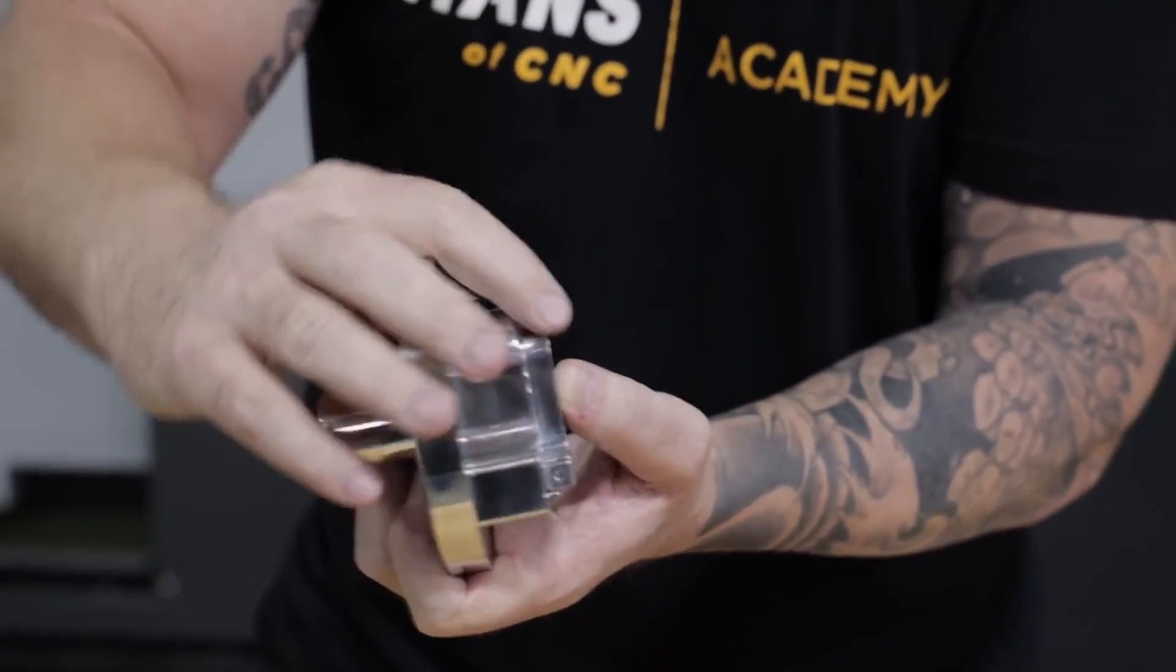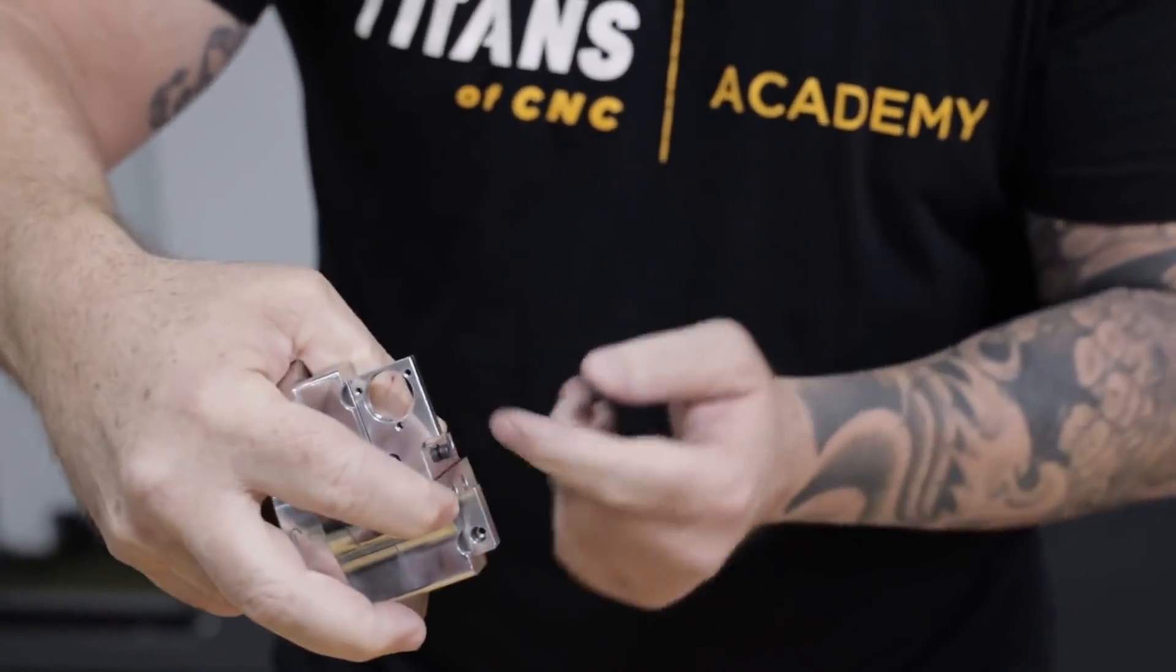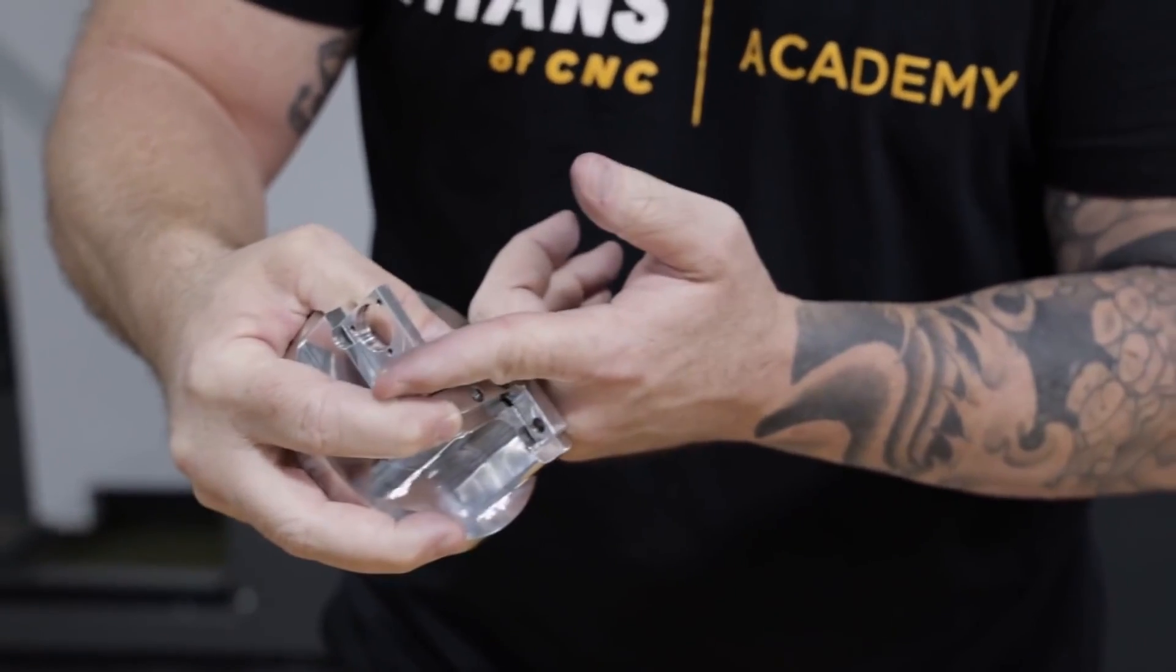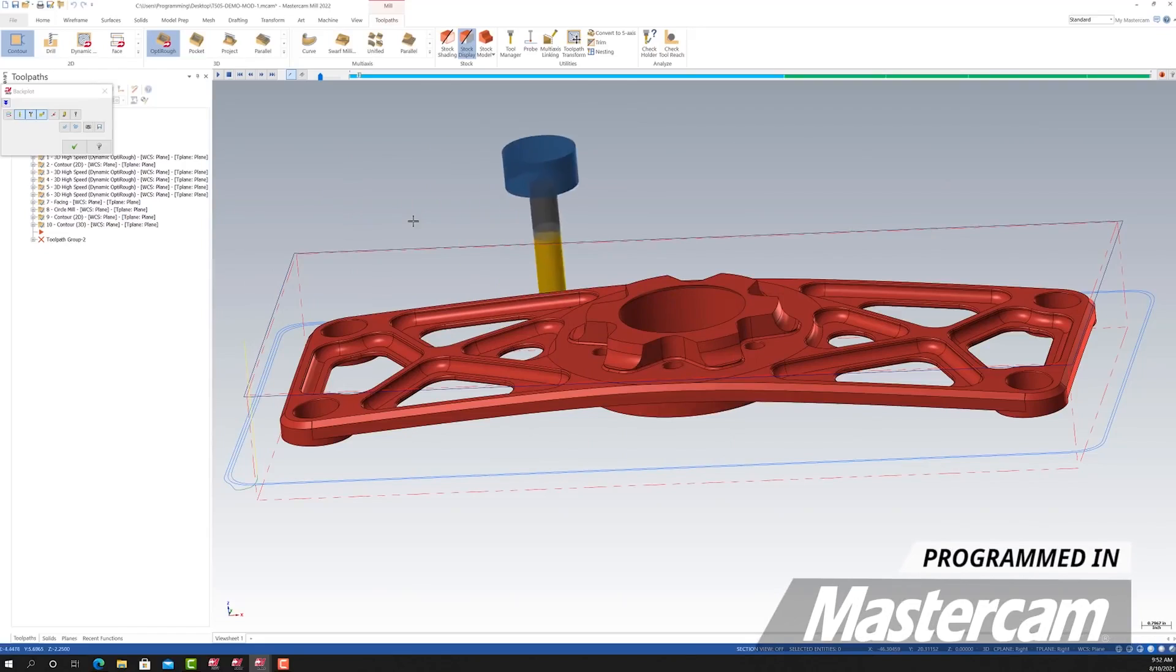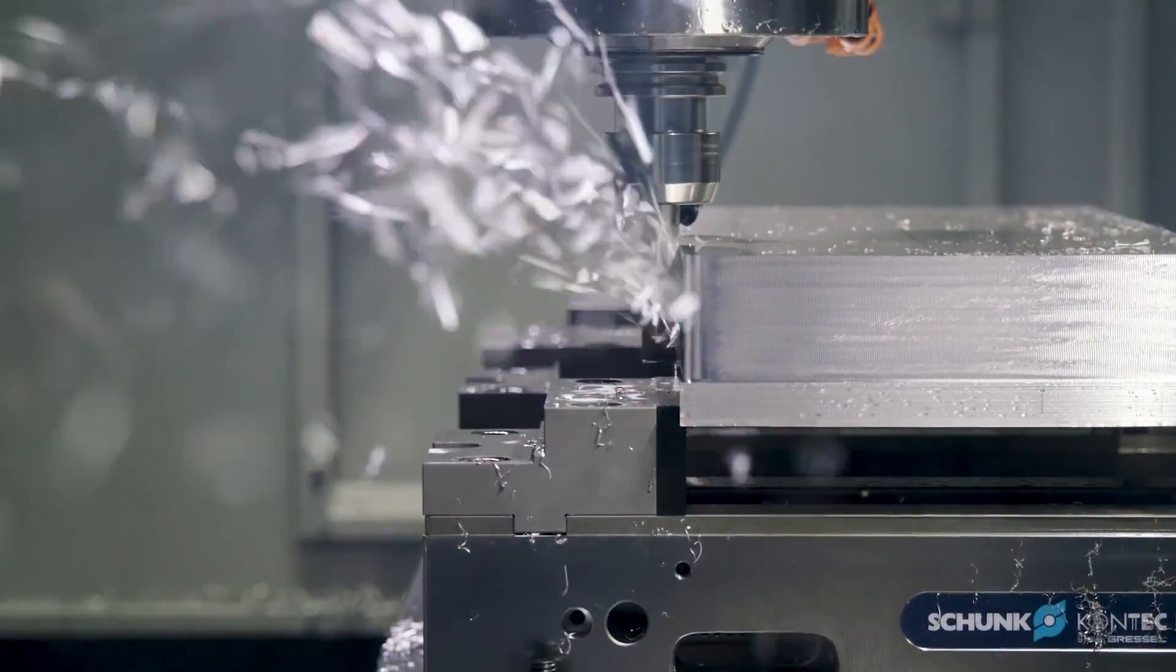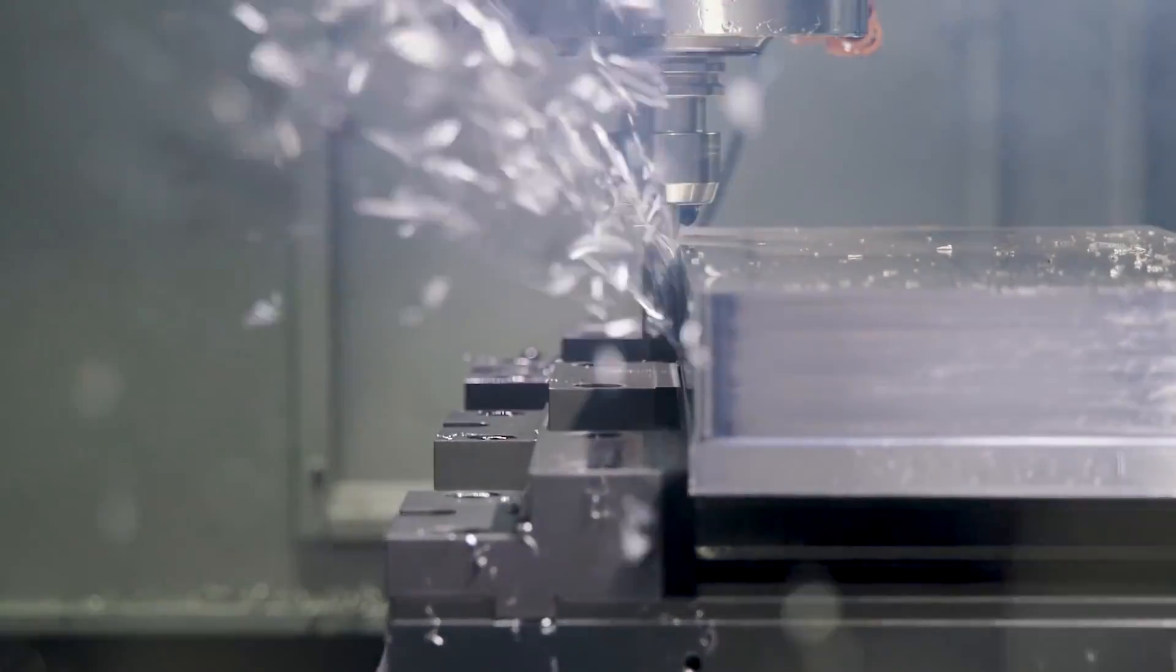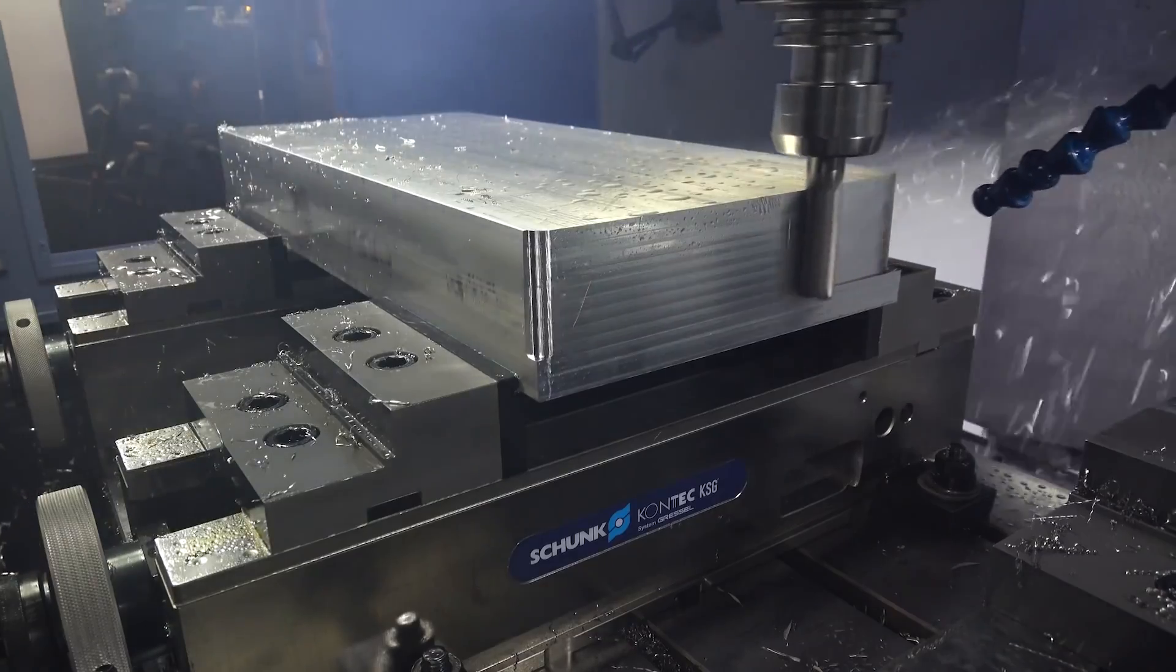The night shift came in, started running the parts, double checked certain dimensions, but didn't catch that one. And day after day, the parts ran and now we have 2,000 parts and 1,700 of these parts are scrapped.